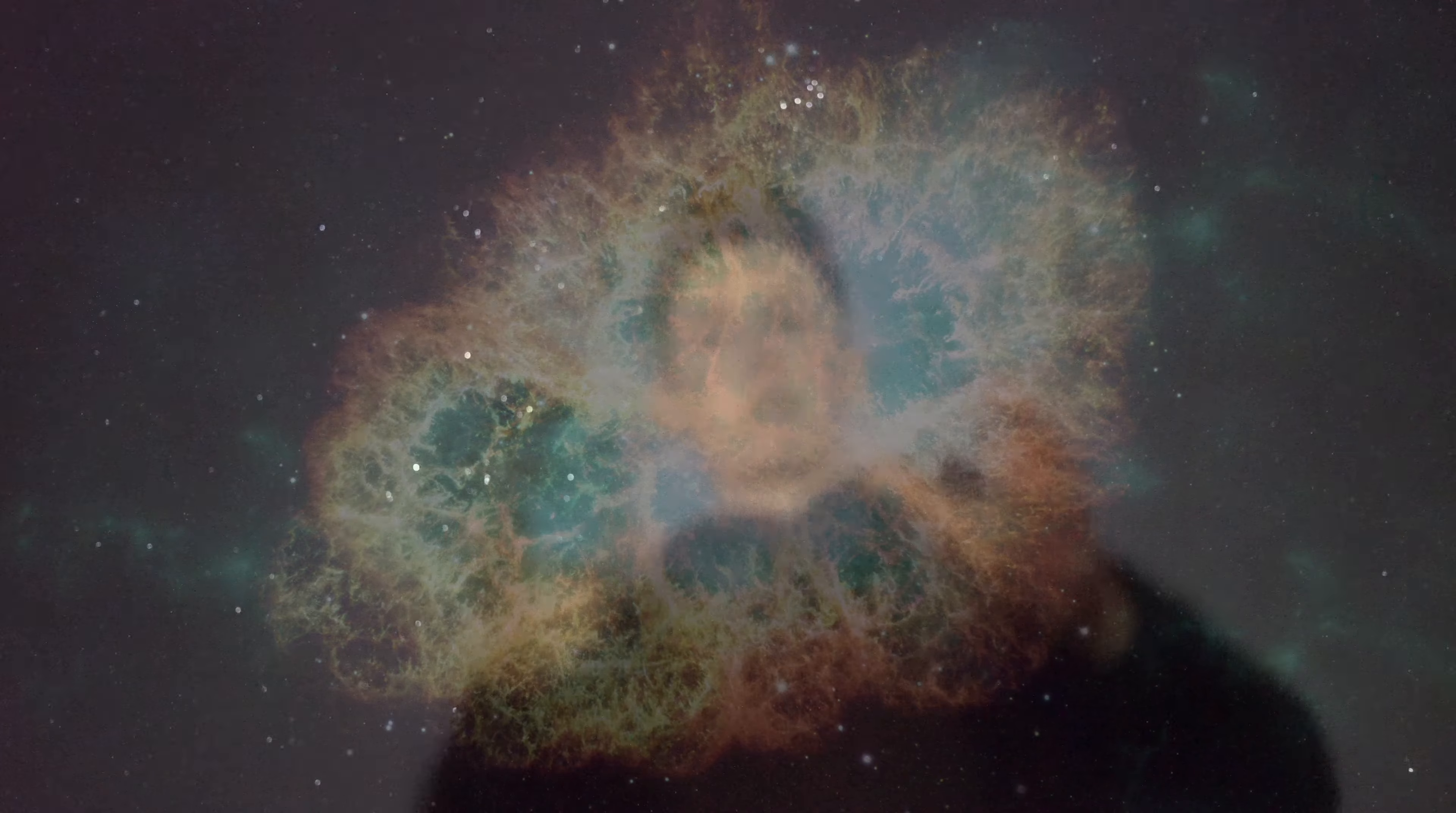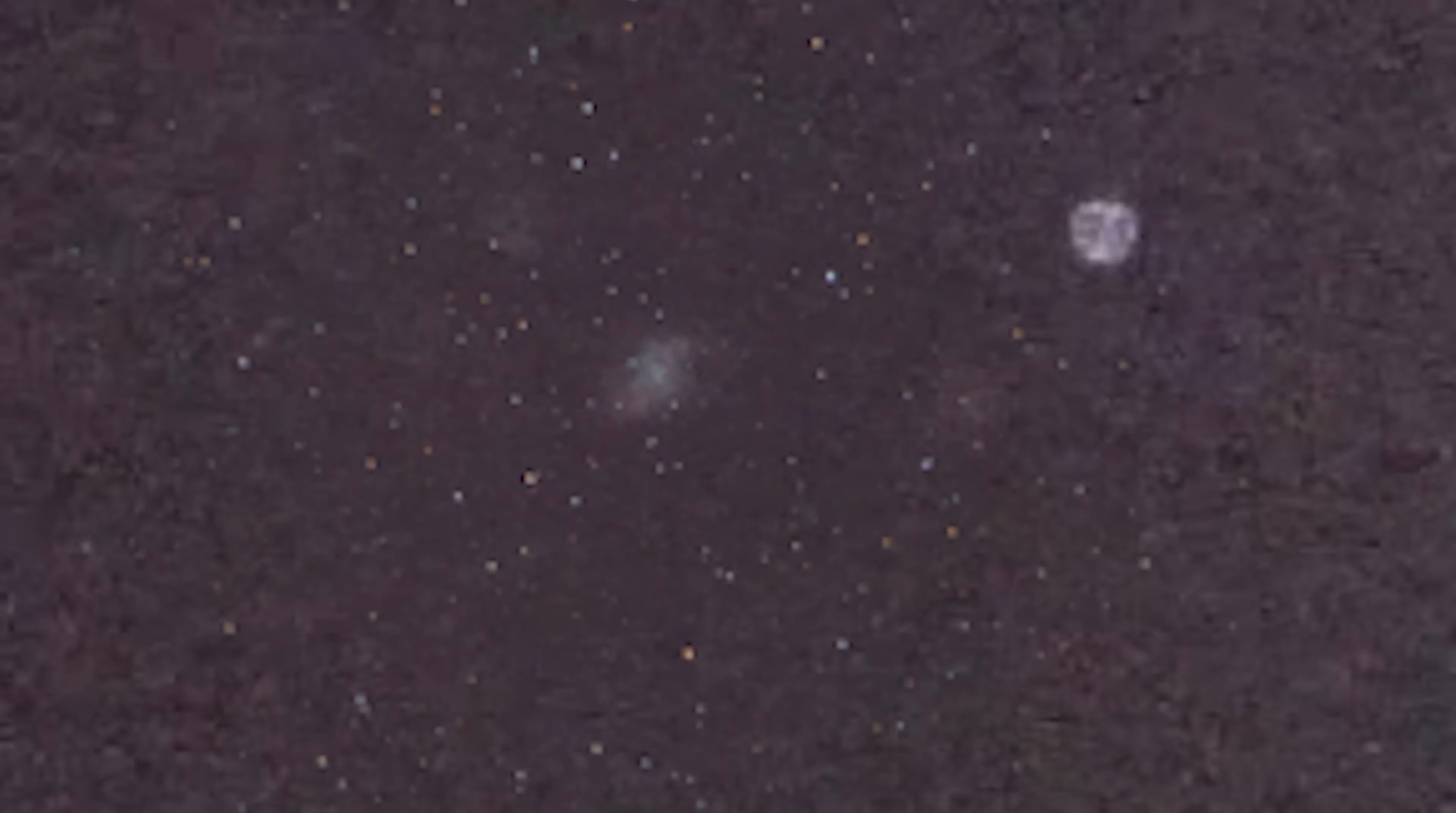The Crab Nebula went supernova almost a thousand years ago in 1054 A.D., and its explosive death was witnessed here on Earth by Chinese astronomers. They recorded it in their night sky and said the brightness lasted for 23 days.